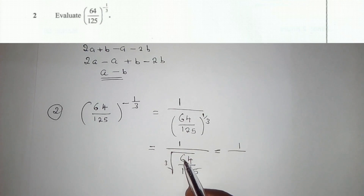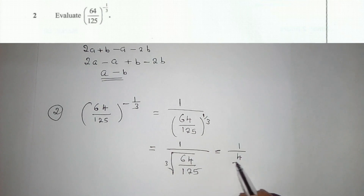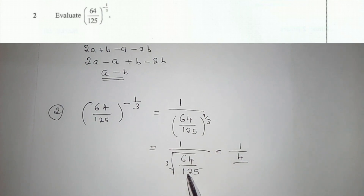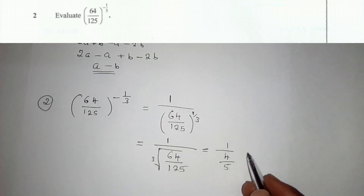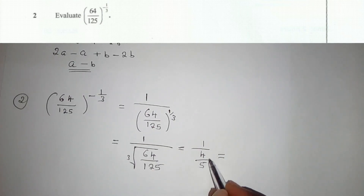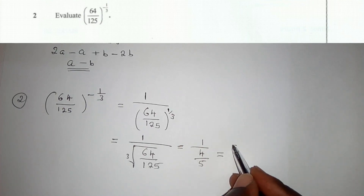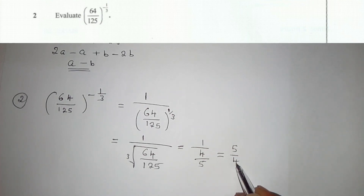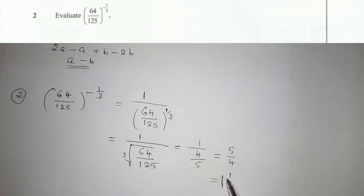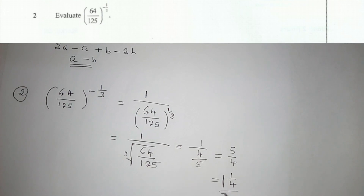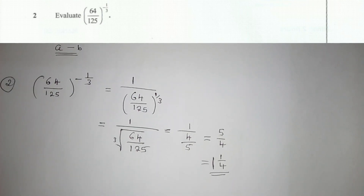We need to find a number whereby if it multiplies itself three times it gives us 64, and that is 4. Over the number that multiplies itself three times to give 125, and that is 5. Since we are dividing this fraction into 1, it will switch. Our answer can be written as 1 and 1 over 4, since 4 into 5 is 1 remainder 1. This is our answer. We go to Question 3.